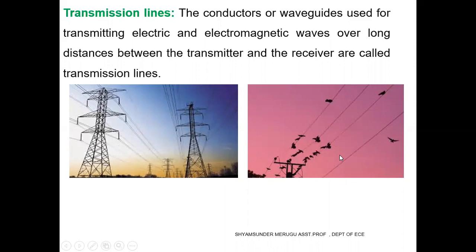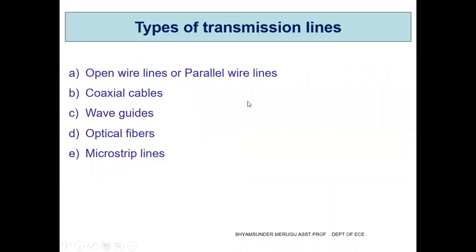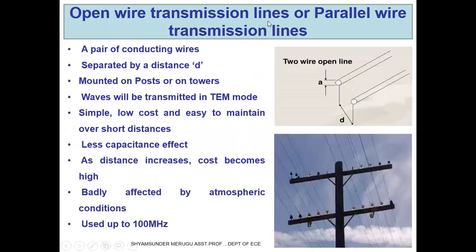The various types of transmission lines that we generally see are: open wire lines or parallel wire lines, coaxial cables, waveguides, optical fibers, and microstrip lines. We will see each one by one.